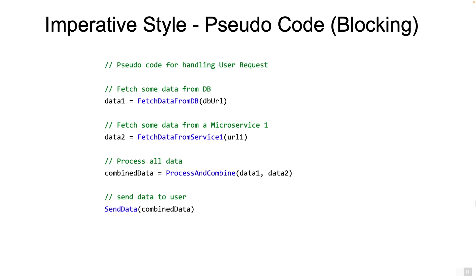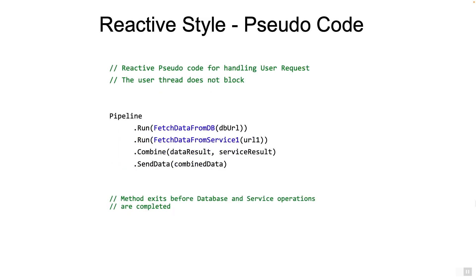If we do reactive style programming, the code will look something like this. Mind you, this is pseudocode, not Java code. The screen shows a pseudocode where a reactive style pipeline is started for a user request. The thread which handles the user request simply specifies what needs to be done as part of the pipeline to fulfill the user request, and then exits without waiting for the database or service request to complete. In other words, the sole purpose of the user request thread is simply to construct the pipeline. The individual parts of the pipeline would be running on separate threads, and it would be the job of the pipeline manager to orchestrate these asynchronous parts and then send the combined result back to the user.